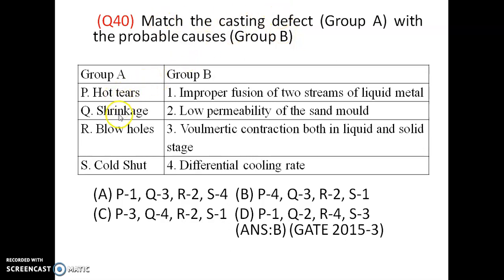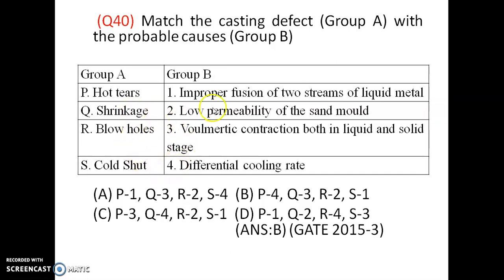Match the following casting defects: hot tears, shrinkage, blow holes, and cold shed. Blow holes are caused by low permeability (R2). Hot tears occur due to differential cooling rate (P). Shrinkage is due to volumetric contraction in both liquid and solid stages (Q). Cold shed is due to improper fusion of two streams of liquid metal (S1). Option B is correct.